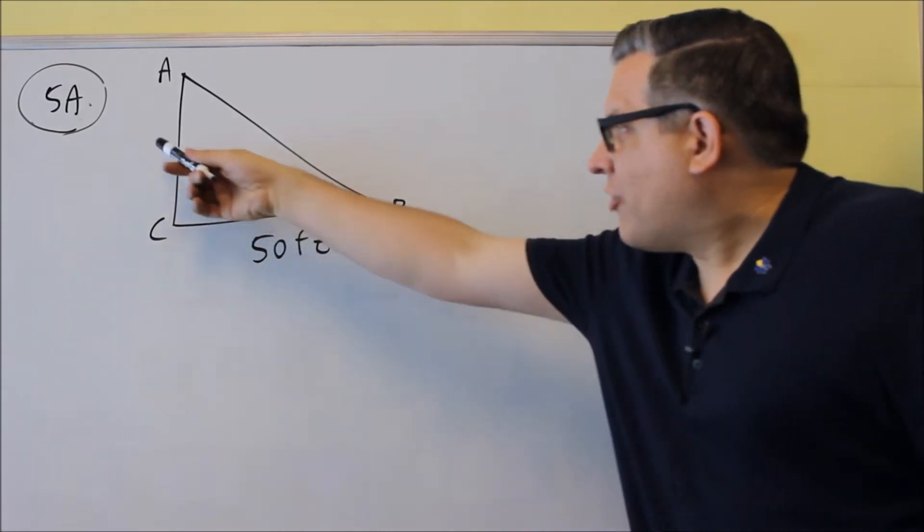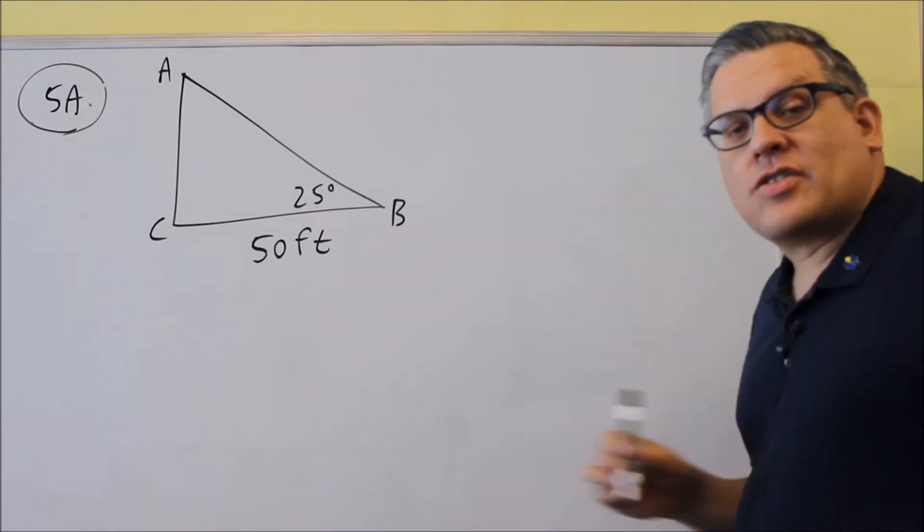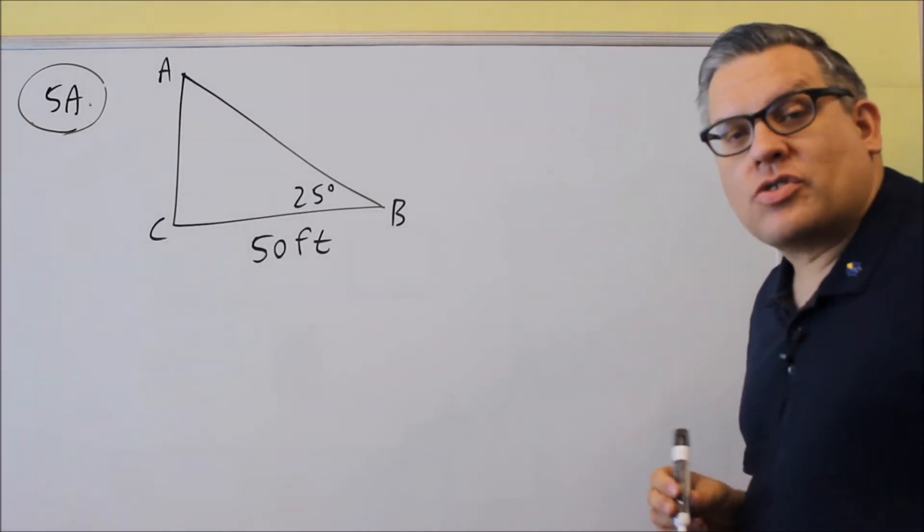So it looks like we want to find the opposite side, and we're given the adjacent side. So the trig function that relates opposite and adjacent that you want to use is going to be tangent.